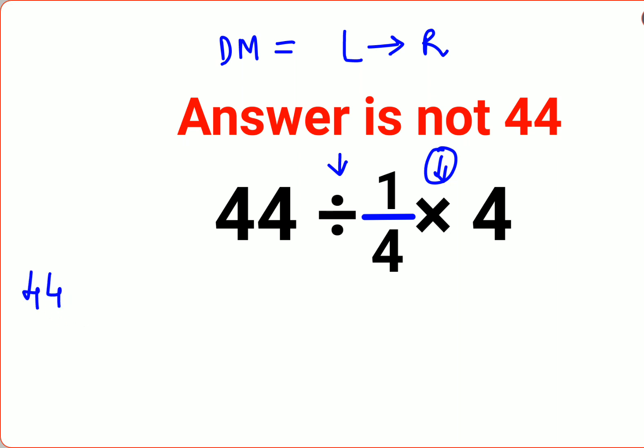So 44 divided by 1 upon 4. We will use the law of KCF for division. So that means keeping the first number as it is, that is 44, changing the division sign to multiplication and flipping the next number. So 1 upon 4 gets reversed to 4 into 4.